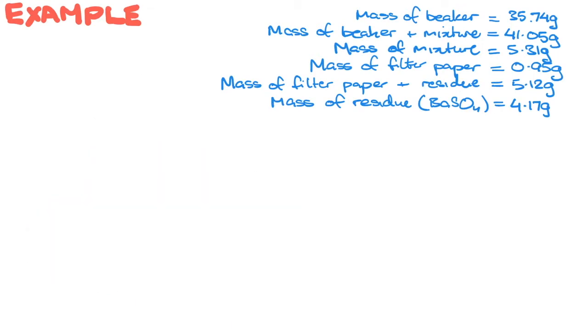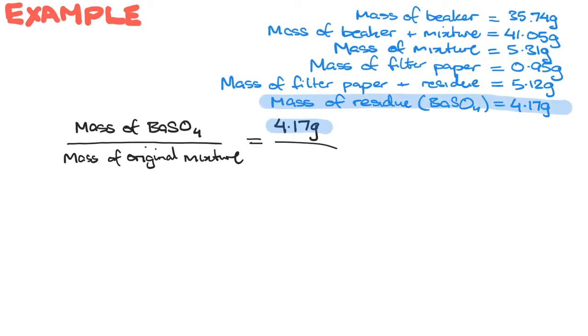Now we can estimate the percentage of barium sulfate within the mixture like so. It's going to be the mass of your barium sulfate divided by the mass of the original mixture, which is going to be 4.17 divided by 5.31, and then we times it by 100 to give us a percentage of 78.5 percent.